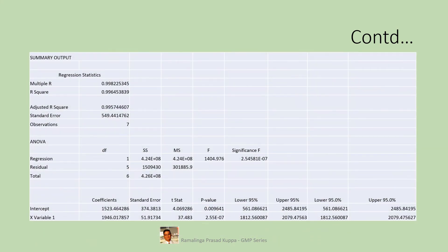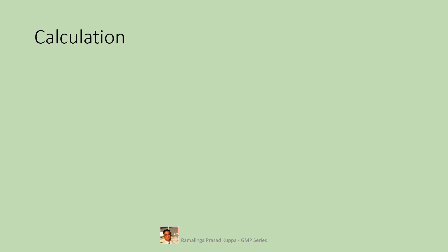The data generated looks like this. You need two parameters from the output: the standard error, which is 549.44, and the slope, which is represented as X Variable 1 Coefficients, equal to 1946.01. Let us now see the calculation of LOD.